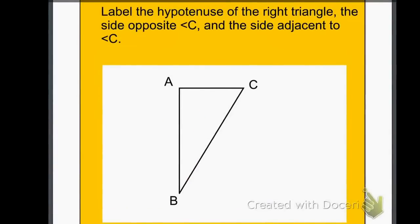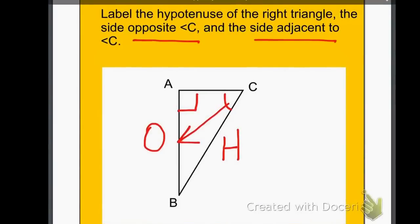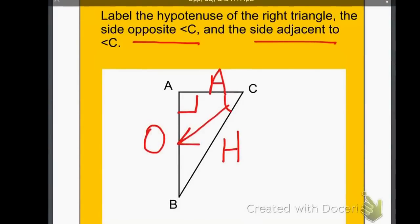Same thing here: label the hypotenuse of the right triangle. I always locate my right angle first. I know the hypotenuse is the opposite side from the right angle and the longest side, so that's going to be my hypotenuse. The side opposite angle C — here's angle C — so the opposite side has to be across, and that leaves the other side as my adjacent side.